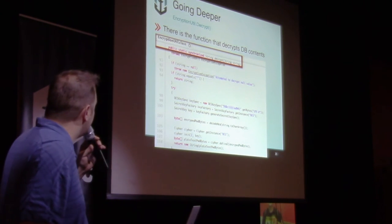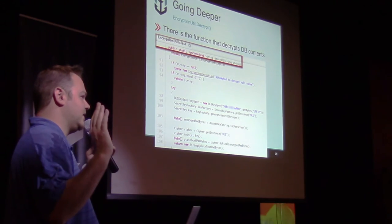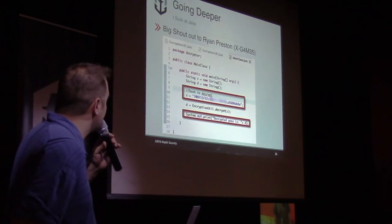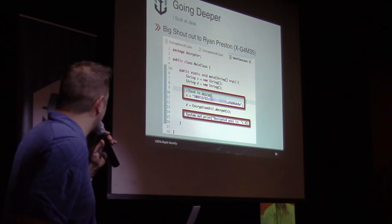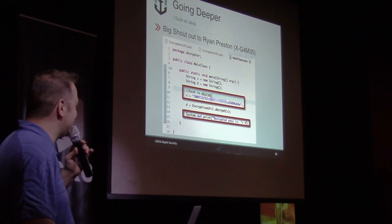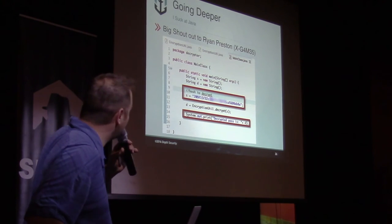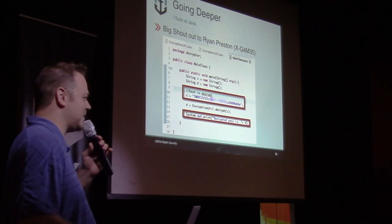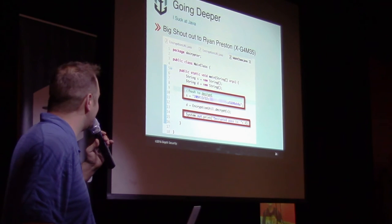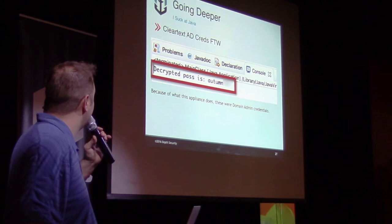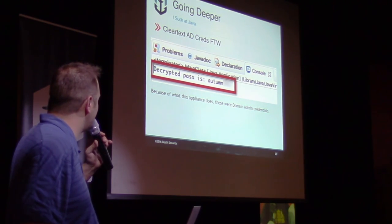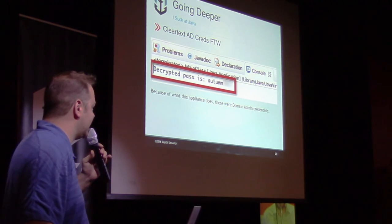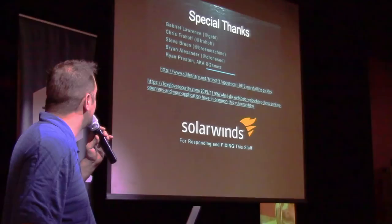This is the function that actually decrypts the database contents when trying to use those credentials to access the virtual machines this thing manages. I had somebody whip up — because I pretty much knew what I had at that point — I knew this was the function that decrypts things from the database. So that stuff I snagged from the SQL dump, I could pipe it into this and get what I was after. Big shout-out to Ryan Preston, otherwise known as X Games. I shot him the hash, he pulled everything into Eclipse and wrote a very small Java program in about five minutes — I felt really stupid, because I kind of suck at Java. Big props to Preston. And that happened — domain credentials, decrypted. Because of what the appliance actually does — it manages virtual machines — these were actual domain credentials that could be recycled to further compromise everything.